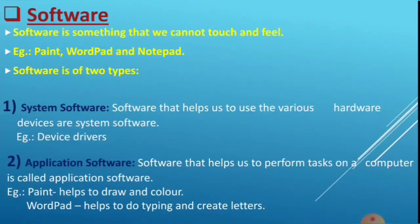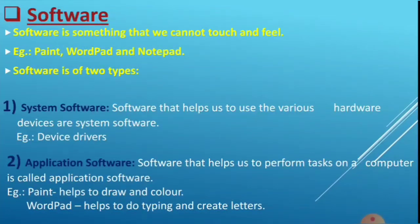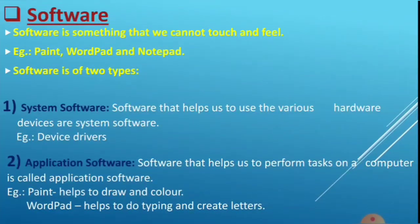There are two types of software: system software and application software. System software helps us to use various hardware devices. Application software helps us to perform a particular task on a computer. An example of system software is device drivers. Examples of application software are Paint, which helps us to draw and color, and WordPad, which helps us to do typing and create letters.